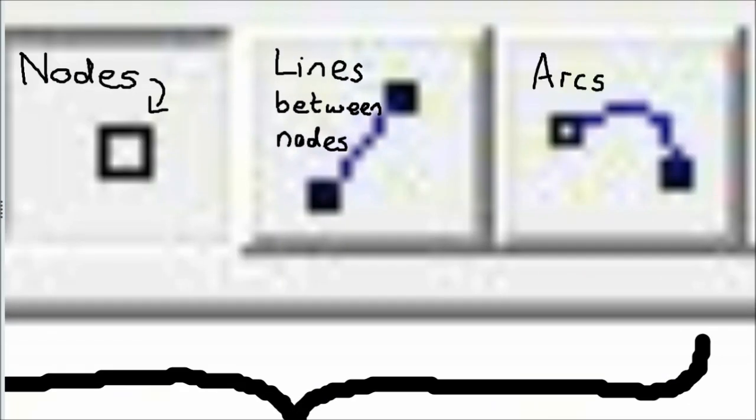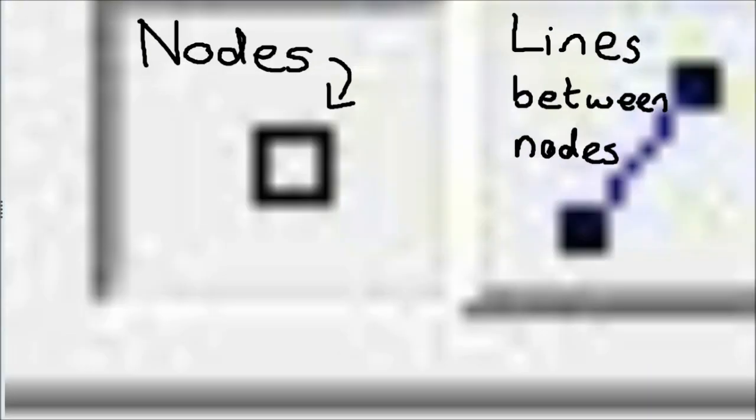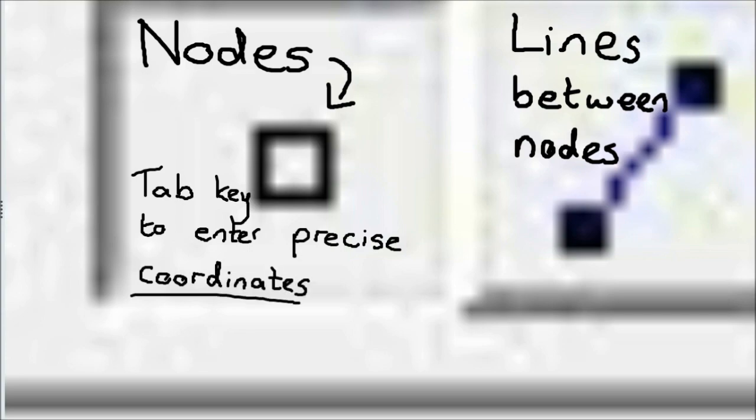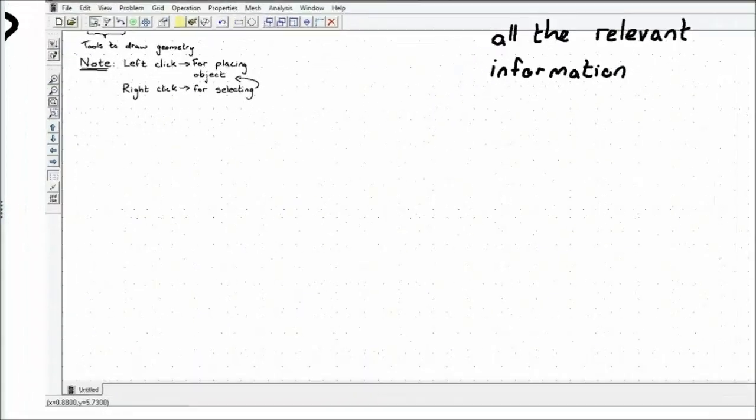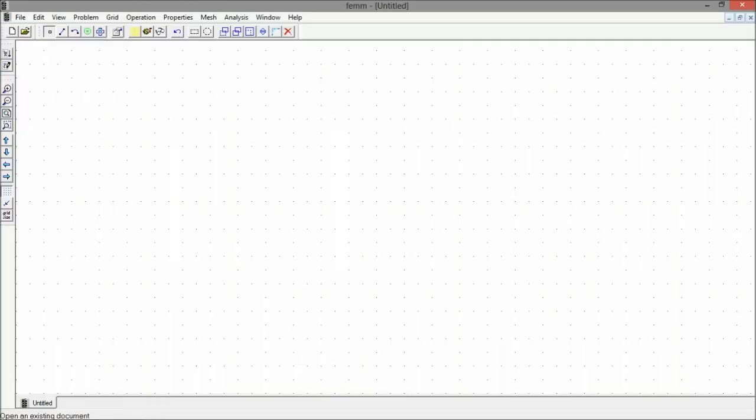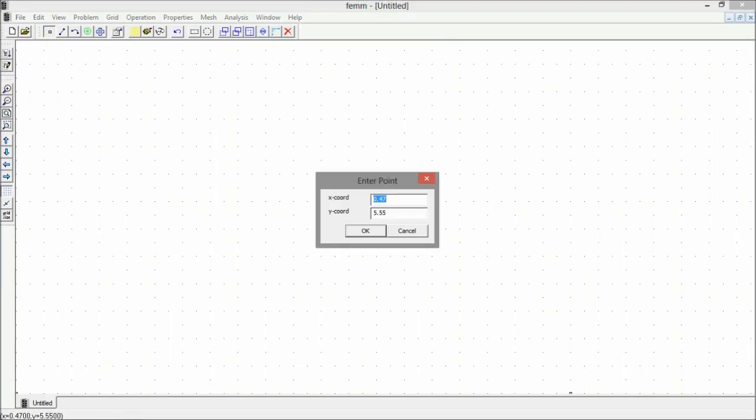Now, we can begin placing nodes. To place nodes accurately, it is useful to use precise coordinates by pressing the Tab key on the keyboard. We can use the copy and cut tools to move geometry appropriately. After having defined the geometry, we will need to assign materials and properties.